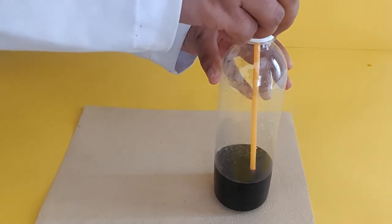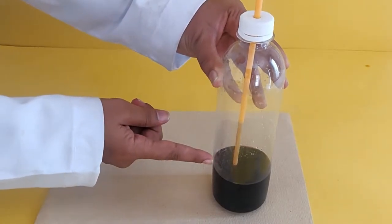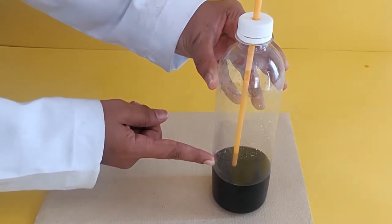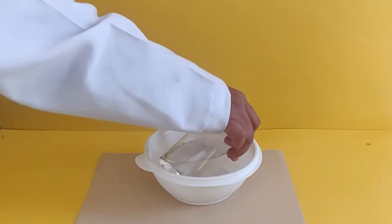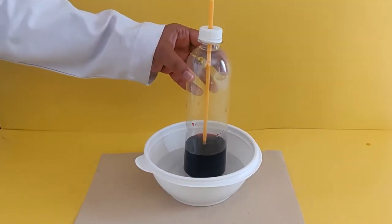Close the lid tightly and ensure the tip of the straw is immersed in the colored water inside the bottle. Now, pour hot water into the bowl and place the bottle in it.